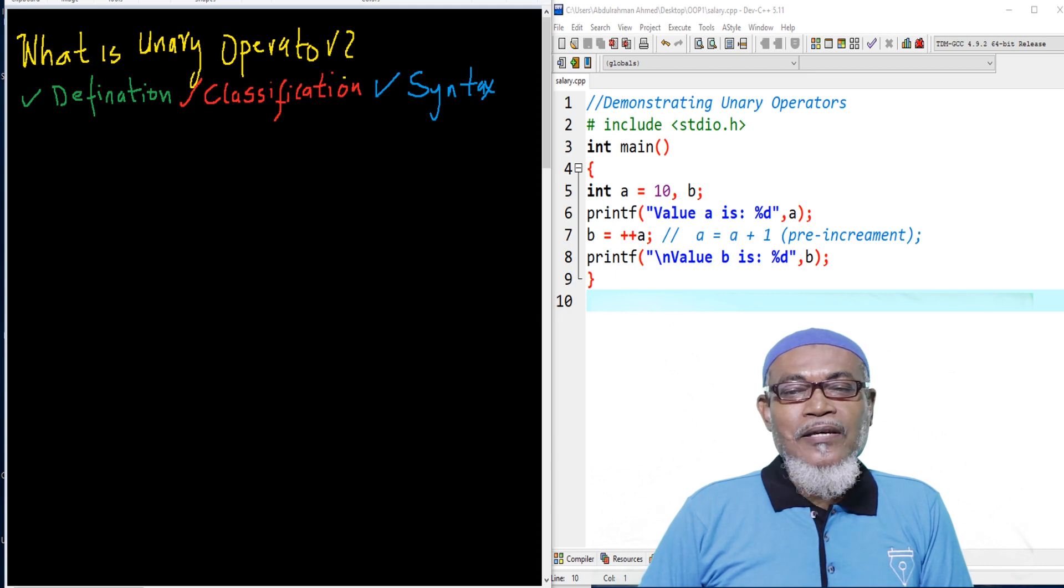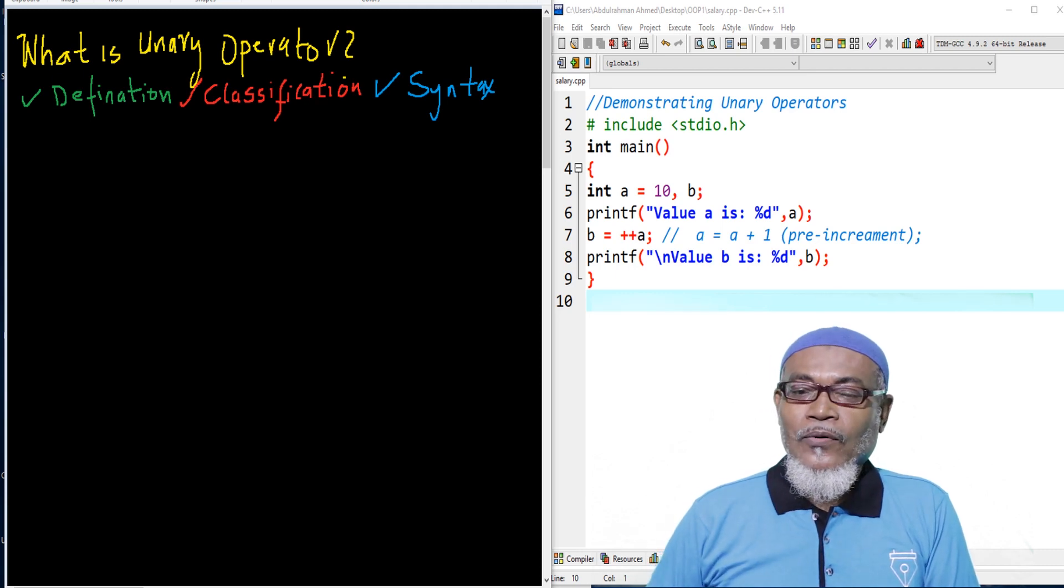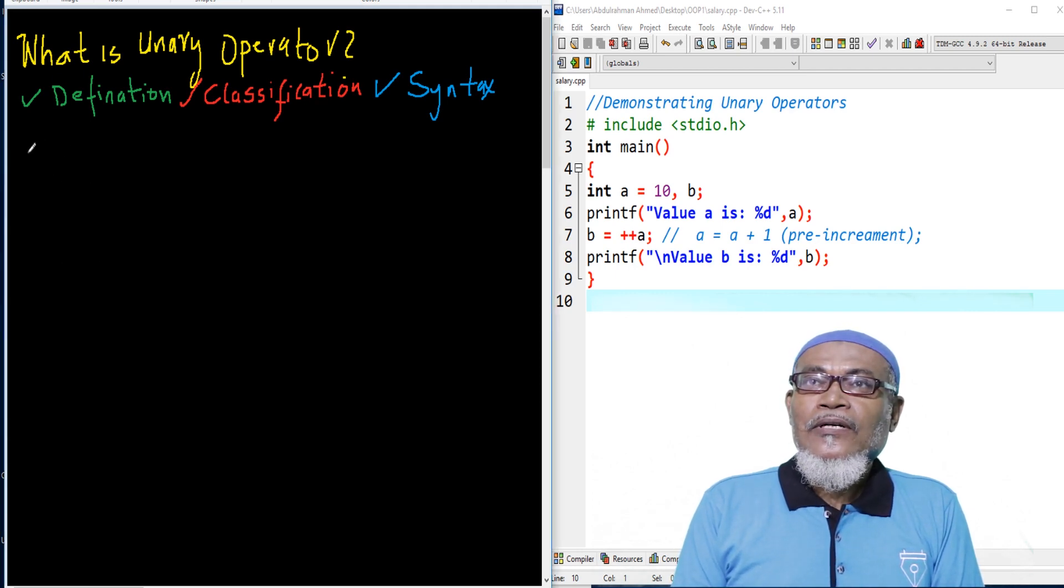Basically, it is a symbol used by C program to perform mathematical computation in a single operand. Here, we are talking about a single operand, that is a value or a particular variable. So basically, it must be a single operand.